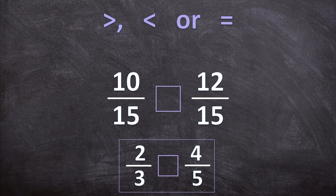12 is bigger than 10, so 12 over 15 is going to be bigger than 10 over 15. Therefore, in our original question, 2 over 3 is going to be smaller than 4 over 5.